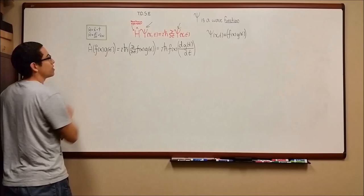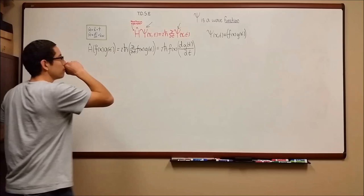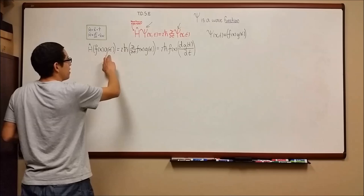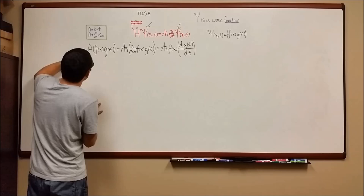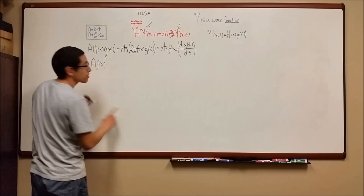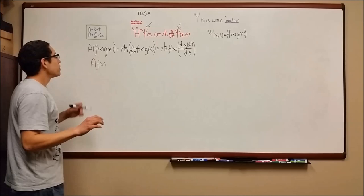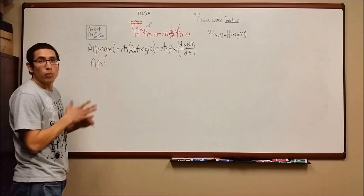What we want to do is move f of x to one side and g of t to the other, so that all x terms are on one side and all t terms are on the other. So we're going to say H-hat acting on f of x — and it's very important to say it that way. Let me explain a little bit about that: these operators are a set of instructions.